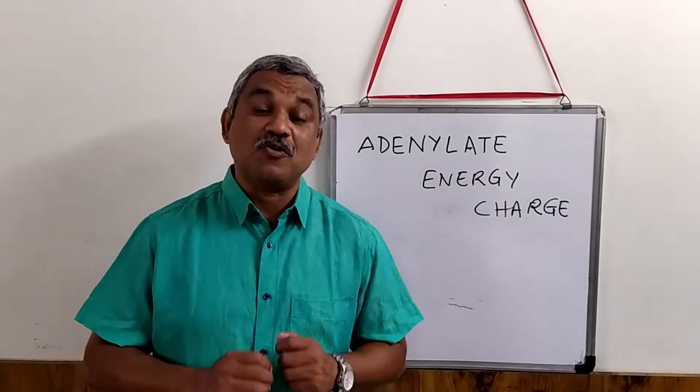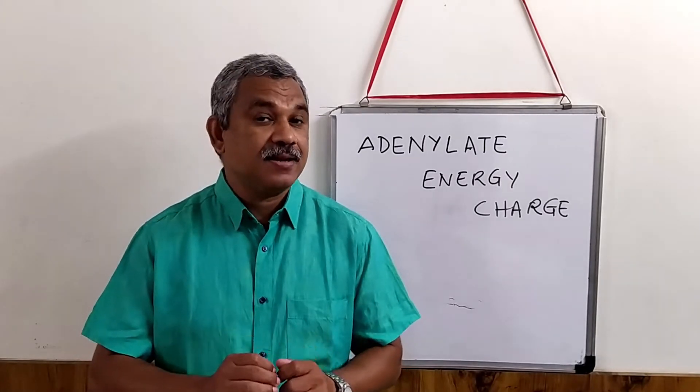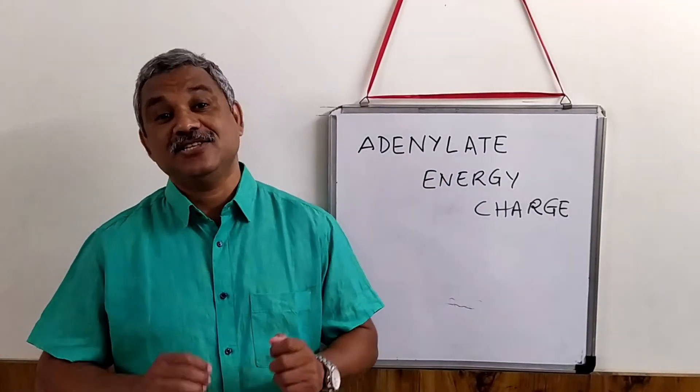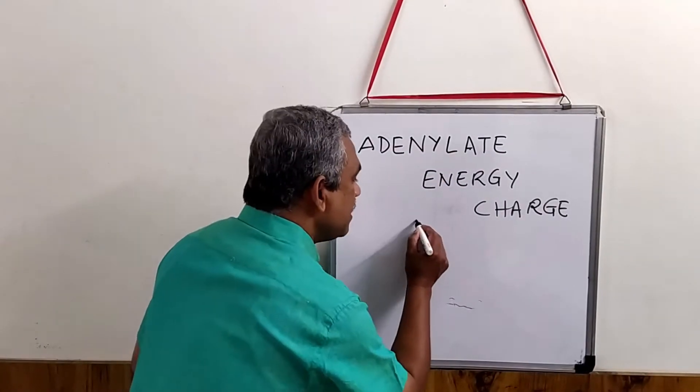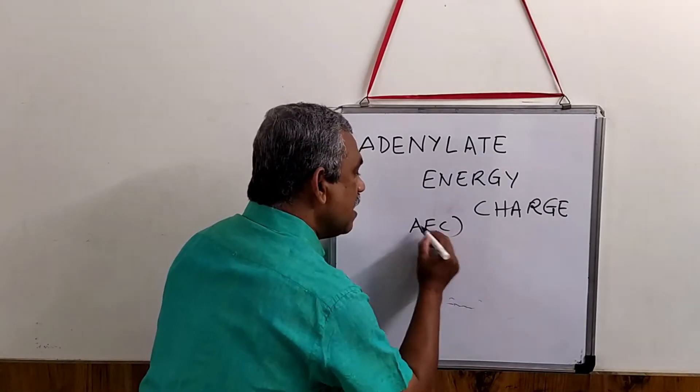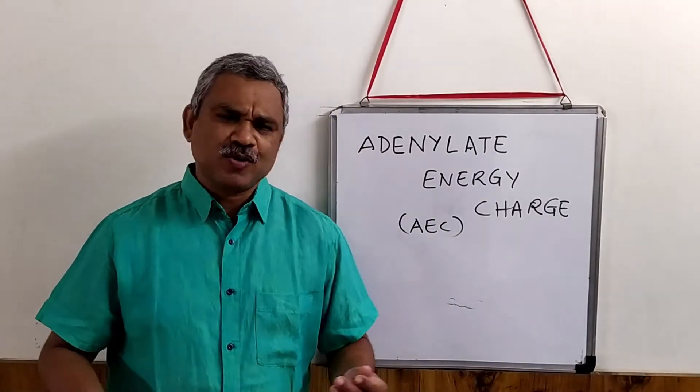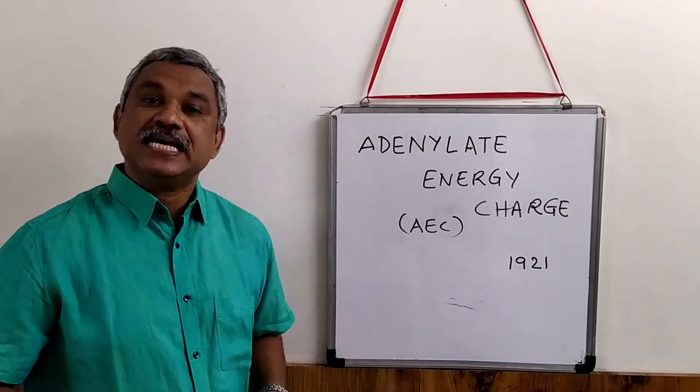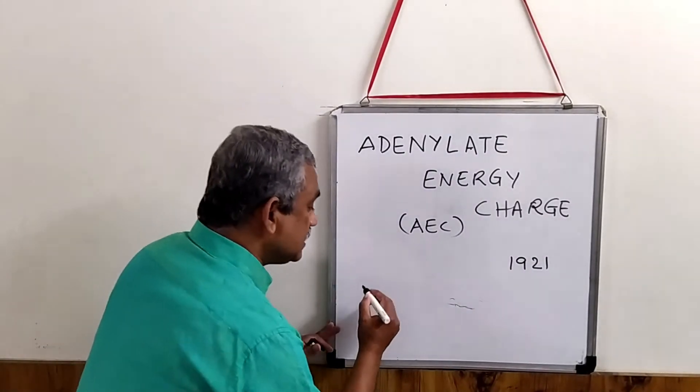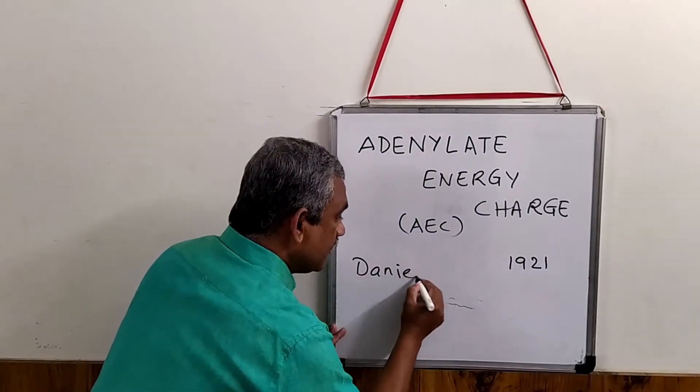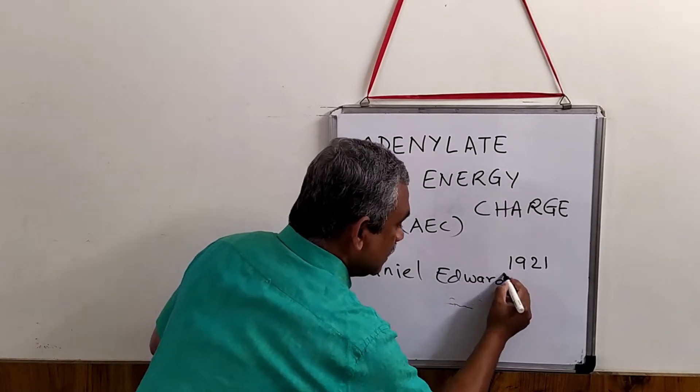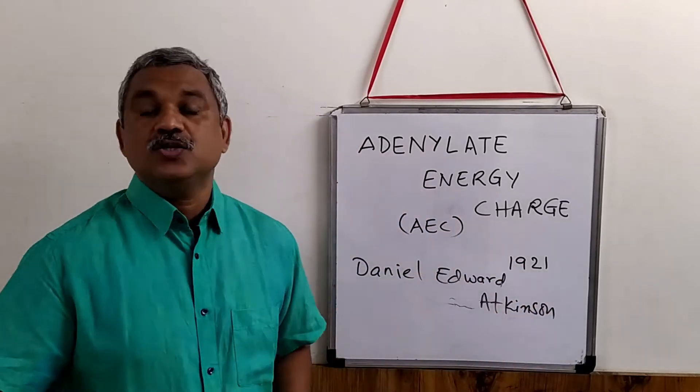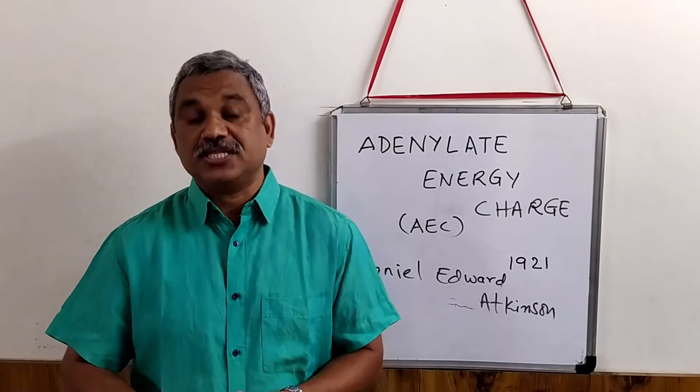A very important concept in understanding metabolism is knowledge about adenylate energy charge. The short form is AEC, adenylate energy charge. This was a concept developed in 1921 by a scientist known as Daniel Edward Atkinson. So what is this concept all about?